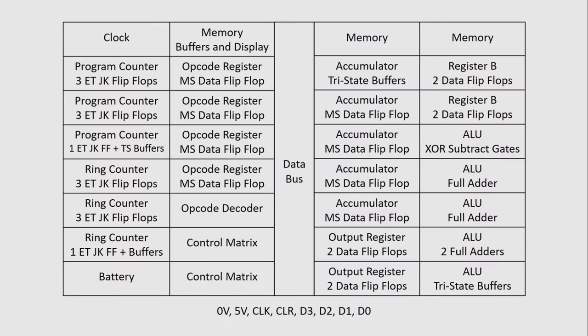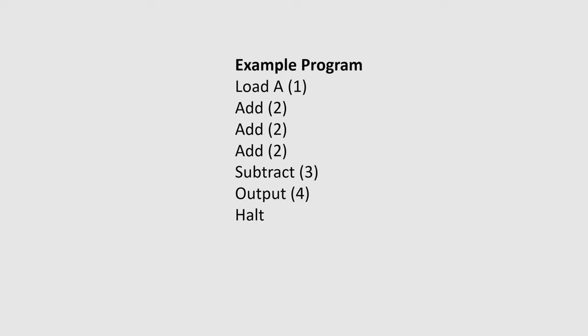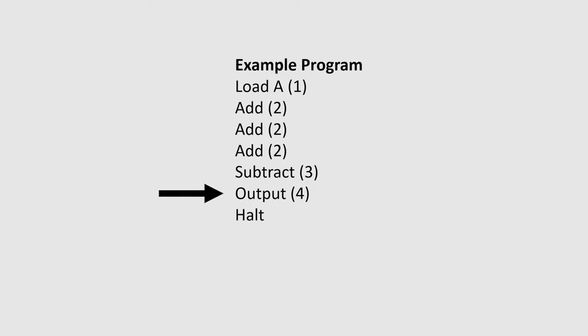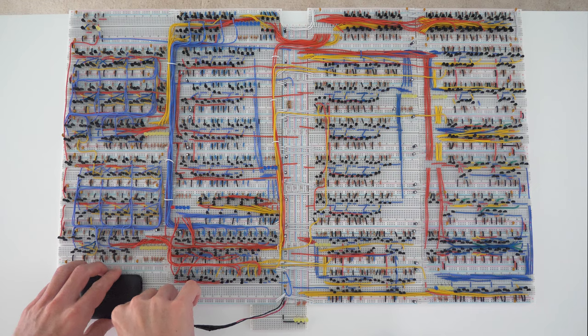Let's run a quick example program and then talk about how each section of the computer is built. The program is going to load the A register with a value of 1, add 2, add 2, add 2, subtract 3, output the value of 4, and then halt the processor.